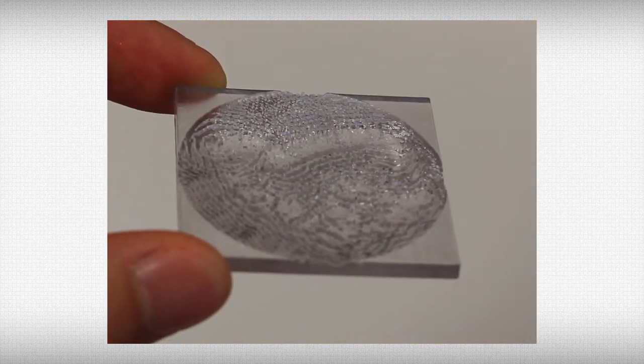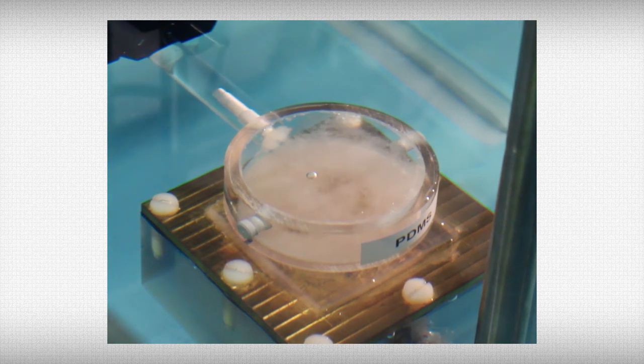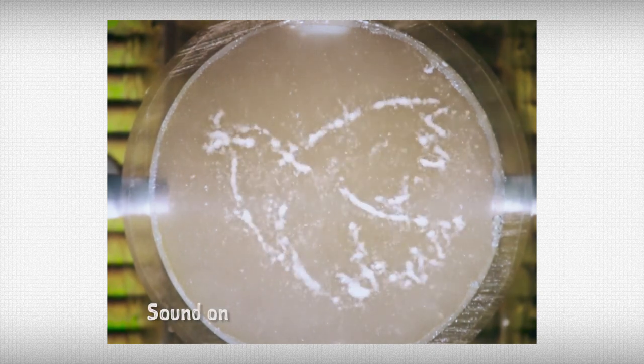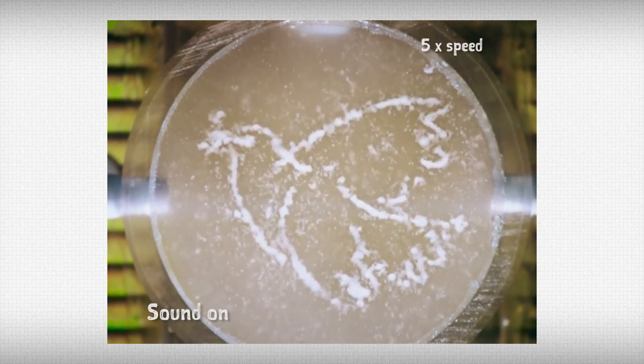We can also use our dove hologram to assemble objects. Here we have a container full of microparticles that we've placed at the hologram image plane. When the transducer is turned on, the particles are assembled into the shape of a dove.